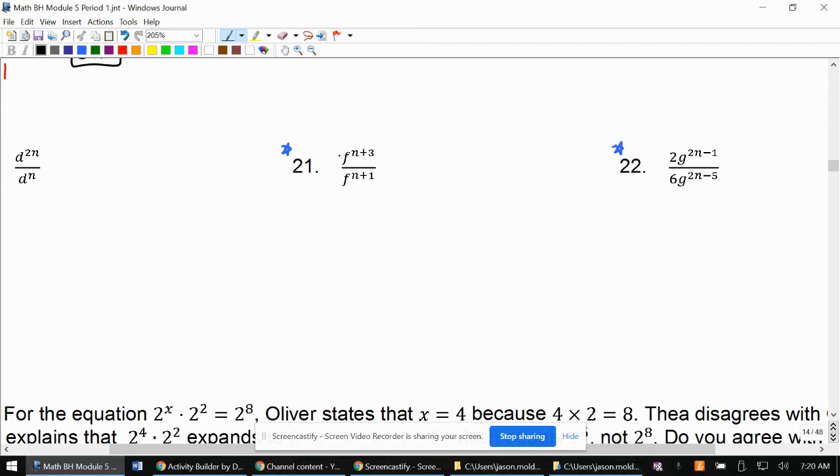The way that I like to do these when it's not as easy or clear which exponent is bigger - and on this one, maybe you could say the top one looks bigger, but as these get more complicated - what I like to do, and I'm going to do it here just to start to prep for this, is I keep the base the same and subtract the exponents. And I do top minus bottom.